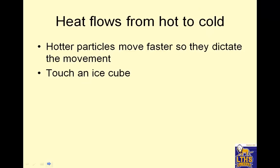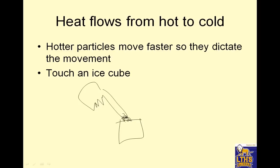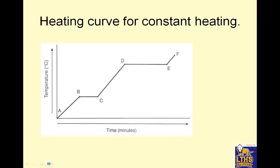Heat flows from hot to cold. Hotter particles move faster, so they dictate the movement. If you touch an ice cube, your hand particles are moving quicker, and as it hits the ice it actually slows down. The heat is transferred to the ice cube, which starts to make it melt, and your finger feels cold. Heat flows from hot to cold.